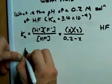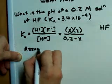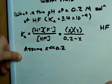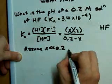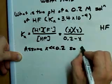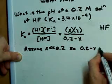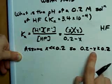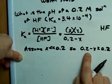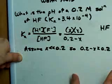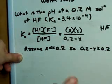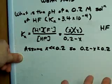So, I'm going to assume that X is much, much less than 0.2. So, that means that 0.2 minus X is approximately the same as 0.2. If I subtract something very, very small from a number, that number doesn't change much. It's like 100 minus 1. 100 minus 1 is 99, but it's approximately 100.